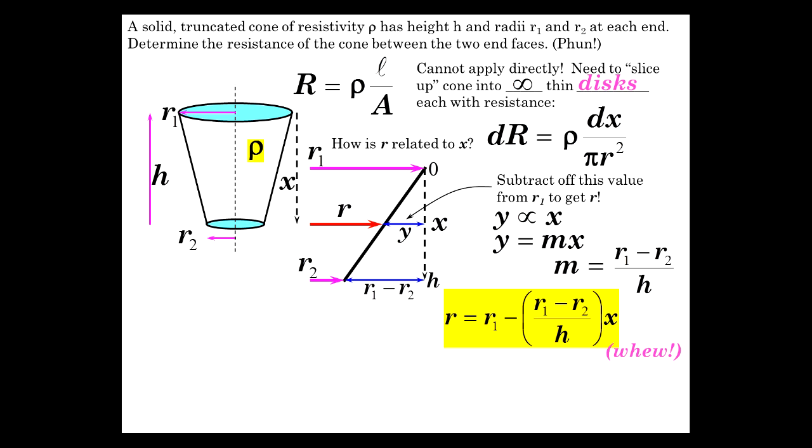That was a lot of the work to sort through the complexity. Now let's just do the problem. So resistance is rho over pi. Those are constants. And then we've got to integrate dx over R squared. We're going to do it from 0 to h.